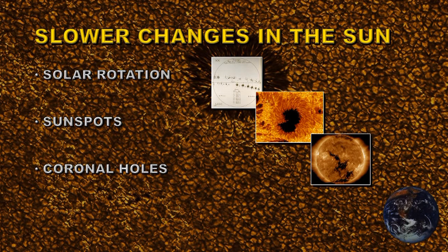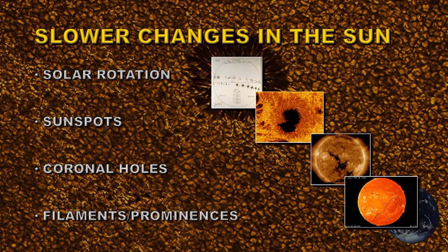Coronal holes are open areas of solar magnetic field through which the high-speed solar wind has an avenue to escape. Once they form, they can remain around for a long time — this particular coronal hole was around last year and lasted for nine months before it dissipated. Filaments and prominences are one and the same thing: filaments are dark channels on the disc, but when they get near the limb they show height structure, visible around the limb on the right. They are cool, dense material suspended in the solar atmosphere. They can last for a very long time, but can equally disappear relatively quickly and then often reform.